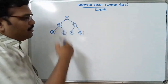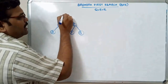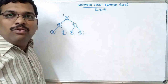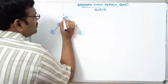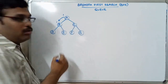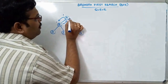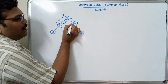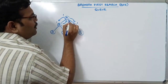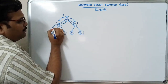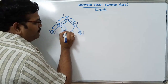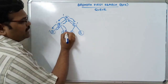We start from node A and mark it as visited. Then visit all the adjacent nodes. There is one adjacent node B, and one more adjacent node C. Then coming to the next level, visit the adjacent node of B and then visit the adjacent node of E.